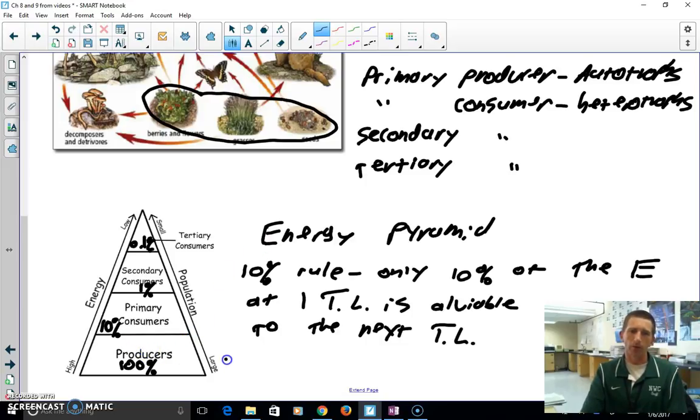So biomass is the amount of weight that a specific trophic level takes up. So let's say that we have 10,000 pounds of berries. So how many pounds of deer would we get from 10,000 pounds of berries? Well, we would get about 1,000, 10%, 1,000 pounds of deer.